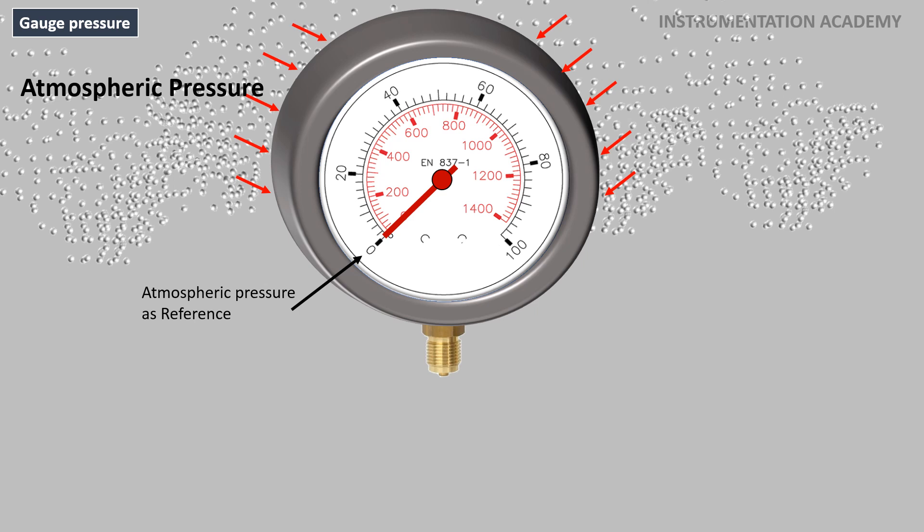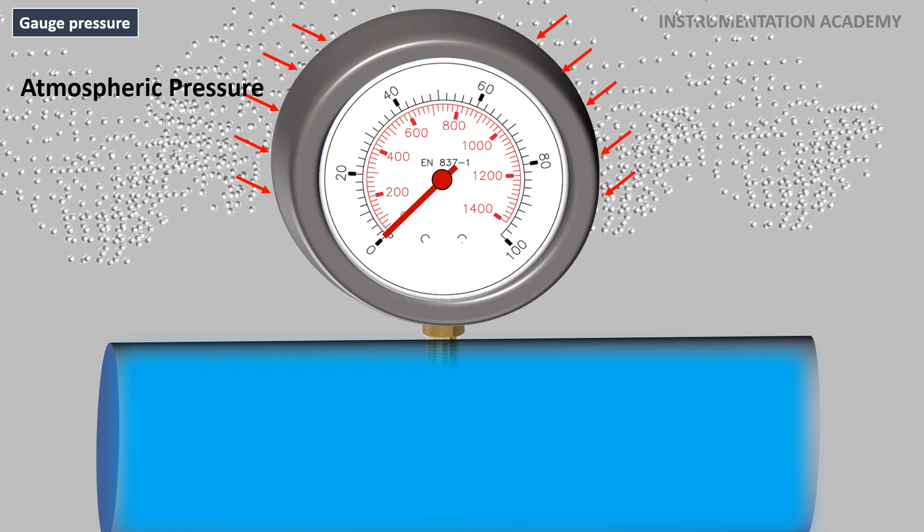Now let's connect this pressure gauge to a container filled with liquid. The pressure gauge will indicate the pressure exerted by the liquid in the container. This pressure is known as gauge pressure.